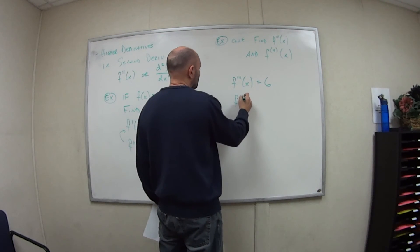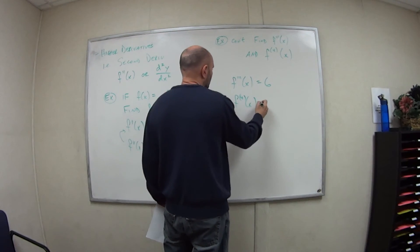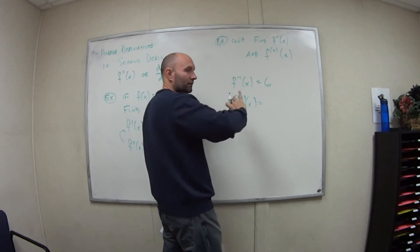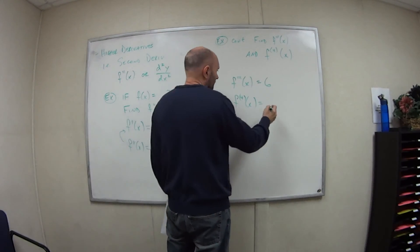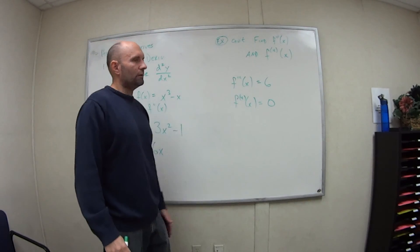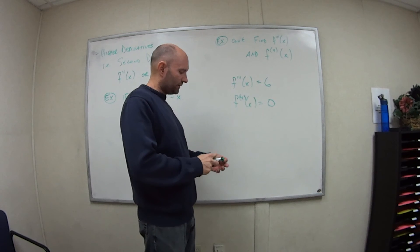And lastly, the fourth derivative of x with respect to x is the derivative of this one. Derivative of any constant is what? Is zero. So the fourth derivative and any derivative after that is just going to be zero.